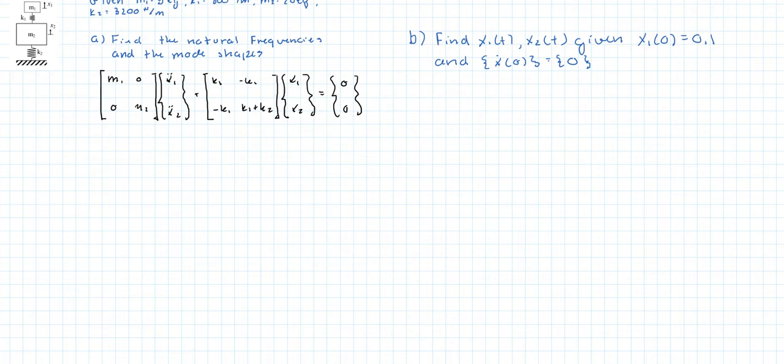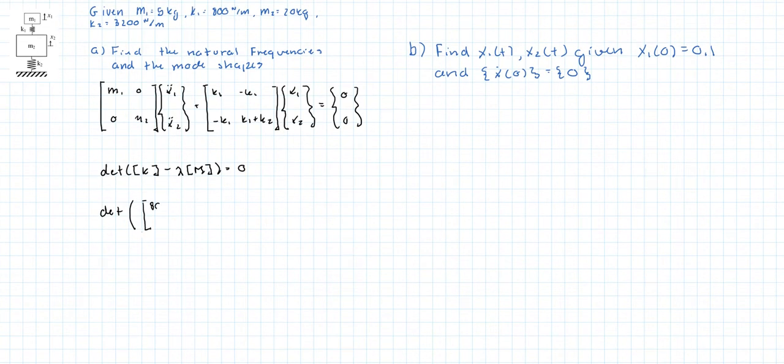Now to find the natural frequencies, we set the determinant of the stiffness matrix minus lambda times the mass matrix equal to zero. So that's the determinant of the stiffness matrix. K1 is 800 minus 800, minus 800 and 800 plus 3200, that's 4000. Minus lambda times the mass matrix which is 5 0, 0 100. That is equal to zero.